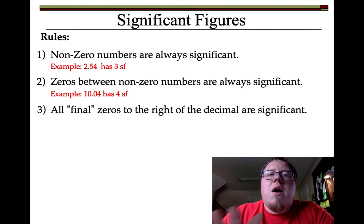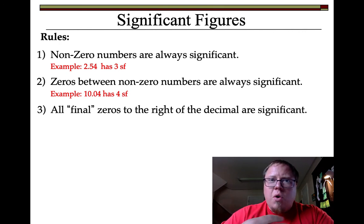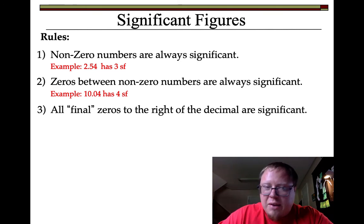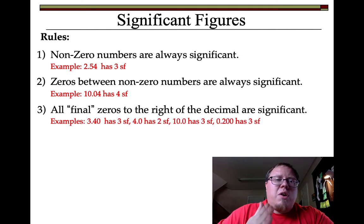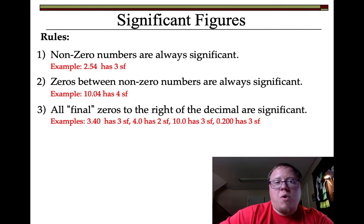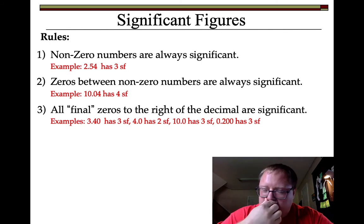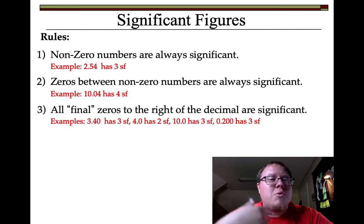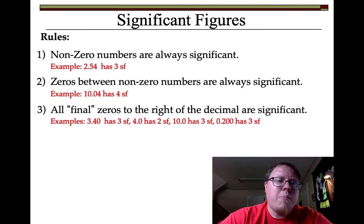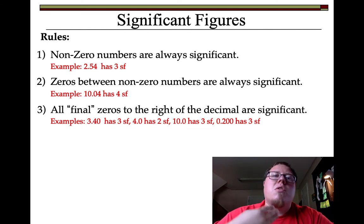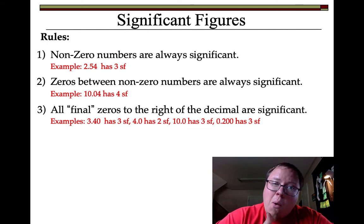All final zeros to the right of the decimal are significant. This is that whole 'write a .0 if you have the lines for it' that people usually forget. For example, 3.40 — that means they had a 3.4 line and a 3.5 line and think it's right on 3.4. So they write 3.40 because if it were just a hair higher, they could have said 3.41 or 3.42. They want their number to say they can read to the hundredths place. Three significant figures — that .0 is significant.